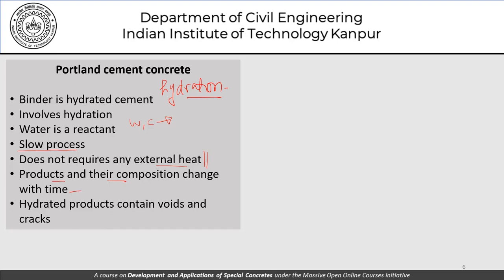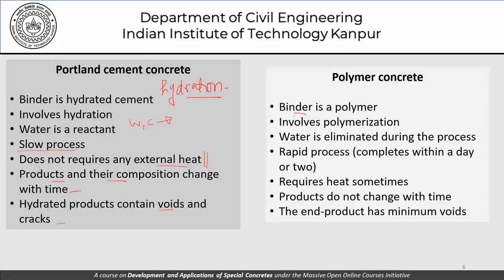Against this, in polymerization and polymer concrete, the binder is a polymer and the process is called polymerization. Water is eliminated from the process — no water is required for polymerization. It is a rapid process, completing within a day or two, and requires application of heat at times. The products do not change composition with time, and the end product has minimum voids — as opposed to the hydrated cement paste which contains voids and cracks.